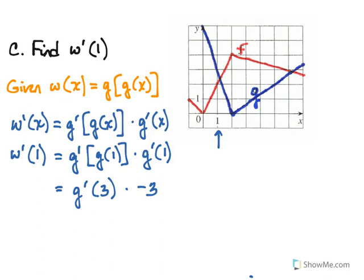Now we need g prime of 3. So here's 3. We need the slope of that segment of the g function where x equals 3. So again, maybe think up 2 in this case, over 3. So the slope is 2 thirds. So we have 2 thirds times the negative 3. So our answer in the end is negative 2.